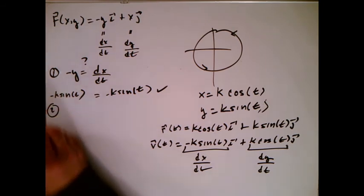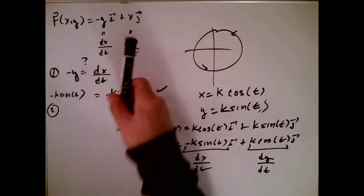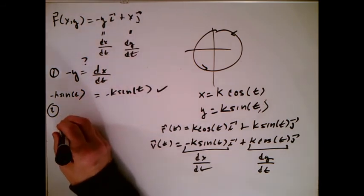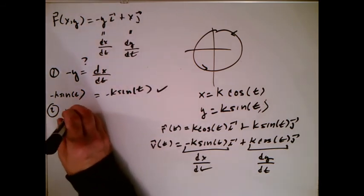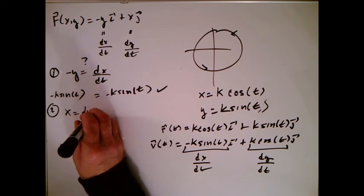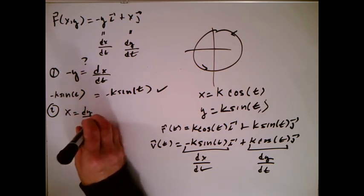The second thing we're supposed to check is that x is exactly, in this case, equal to dy dt. So I'm going to write down x equals dy dt. This is something that needs checking.